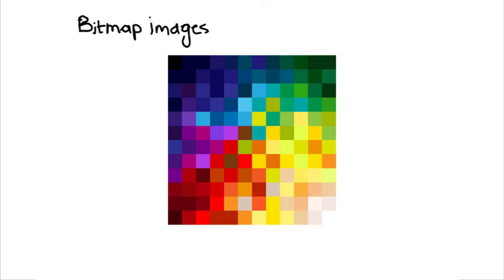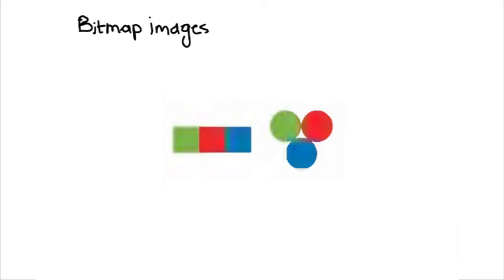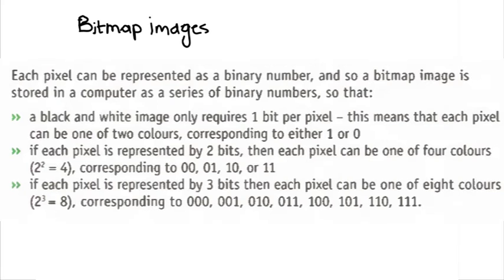Now let's talk about images. Bitmap images are made up of pixels — picture elements. An image is made up of a two-dimensional matrix of pixels. Each pixel can be represented as a binary number, and so a bitmap image is stored in a computer as a series of binary numbers. A black-and-white image only requires one bit per pixel, meaning each pixel can be one of two colors, corresponding to either 1 or 0. If each pixel is represented by 2 bits, then each pixel can be one of 4 colors.